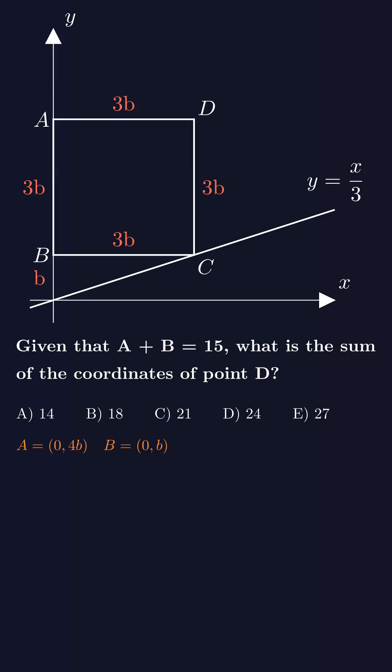Similarly, point B has coordinates (b, b). We're told the sum of their coordinates is 15. That gives us 5b equals 15, so b equals 3.